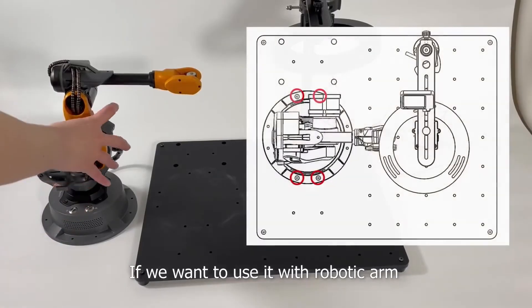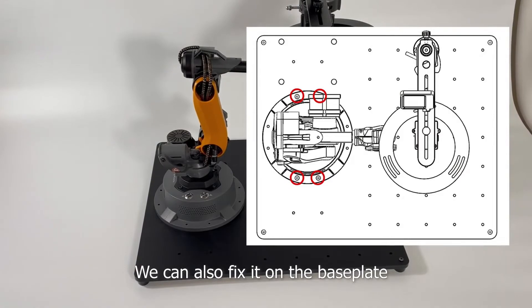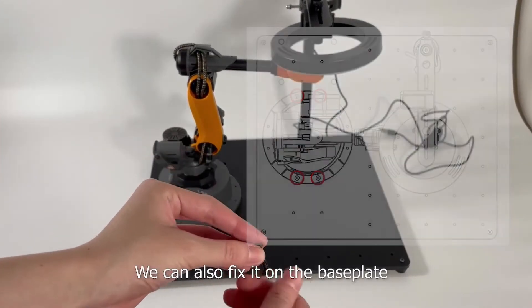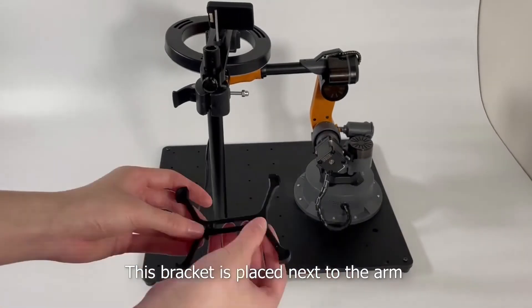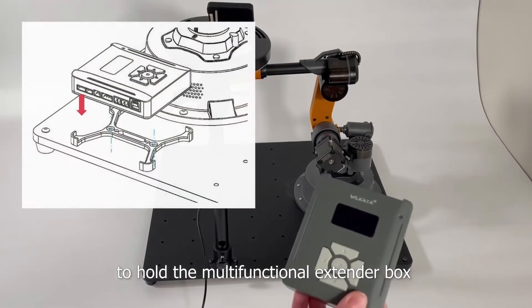If we want to use it with robotic arm, we can also fix it on the base plate with the M418 screw. This bracket is placed next to the arm to hold the multifunctional extender box.